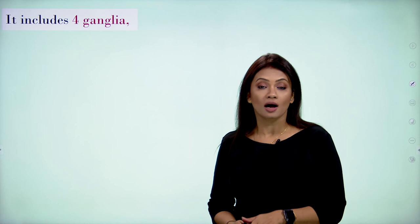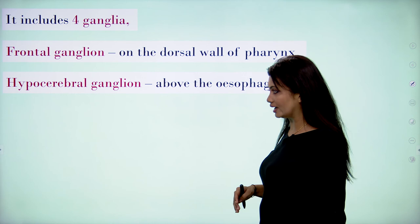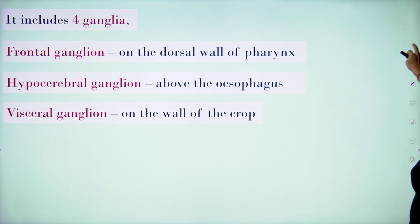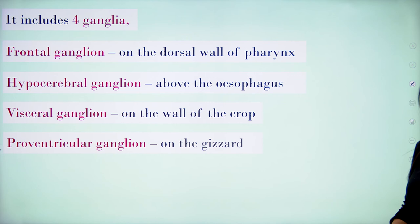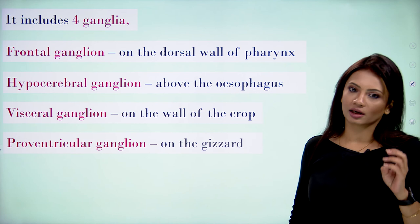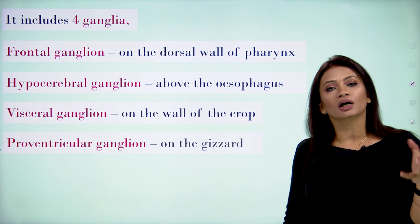The autonomic nervous system also includes four ganglia. First is the frontal ganglion, located on the dorsal wall of the pharynx. Second is the hypocerebral ganglion, above the esophagus. Third is the visceral ganglion, present on the wall of the crop. Fourth is the proventricular ganglion, located on the gizzard. These four ganglia comprise the autonomic nervous system.